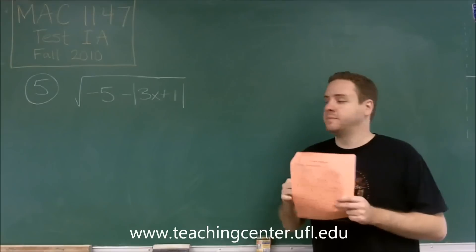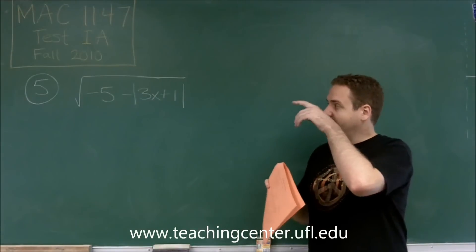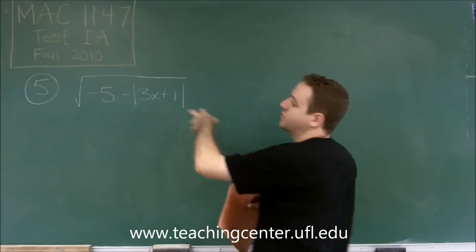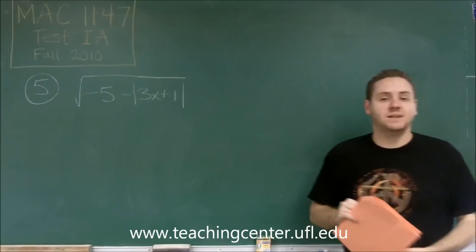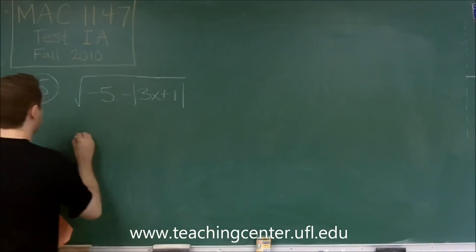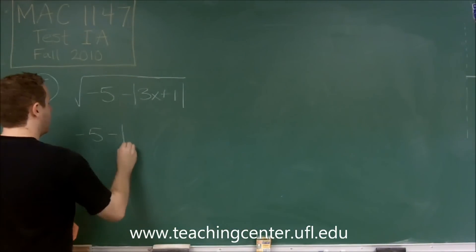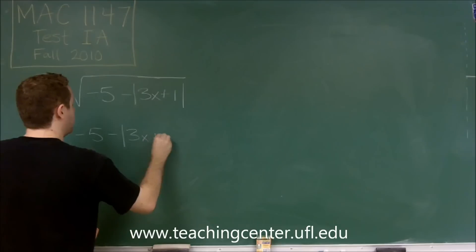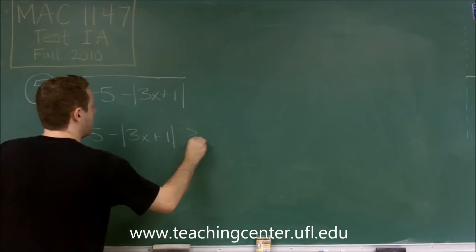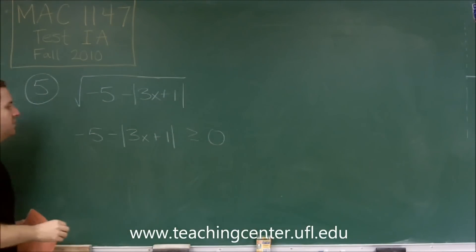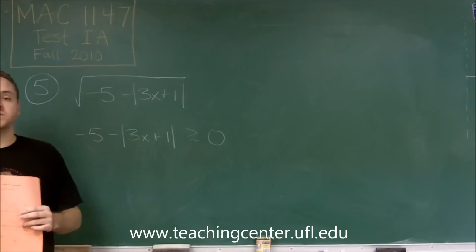Can't have negatives inside square roots. So your normal process would be take everything that's under the root and set it up as an inequality: negative 5 minus absolute value of 3x plus 1, and say if that is greater than or equal to zero, then those x's would be in my domain.